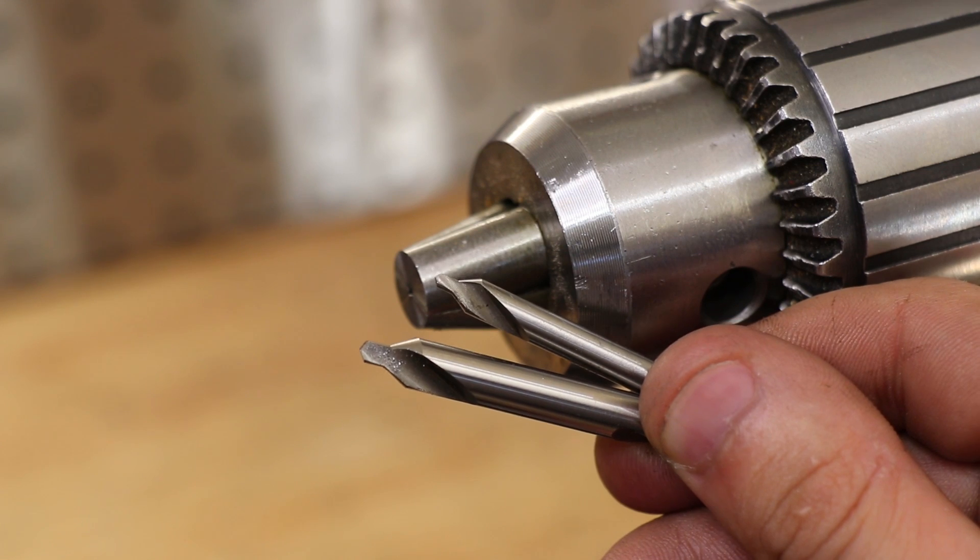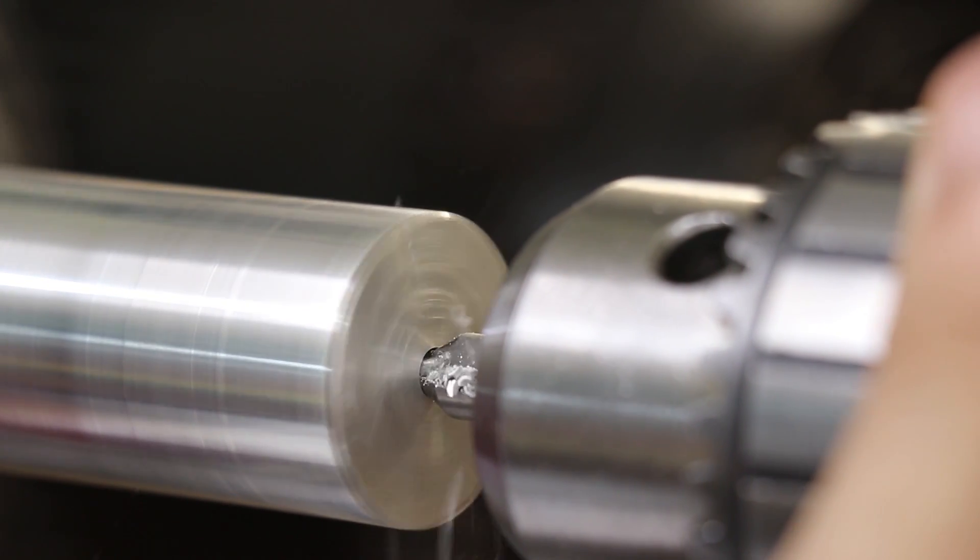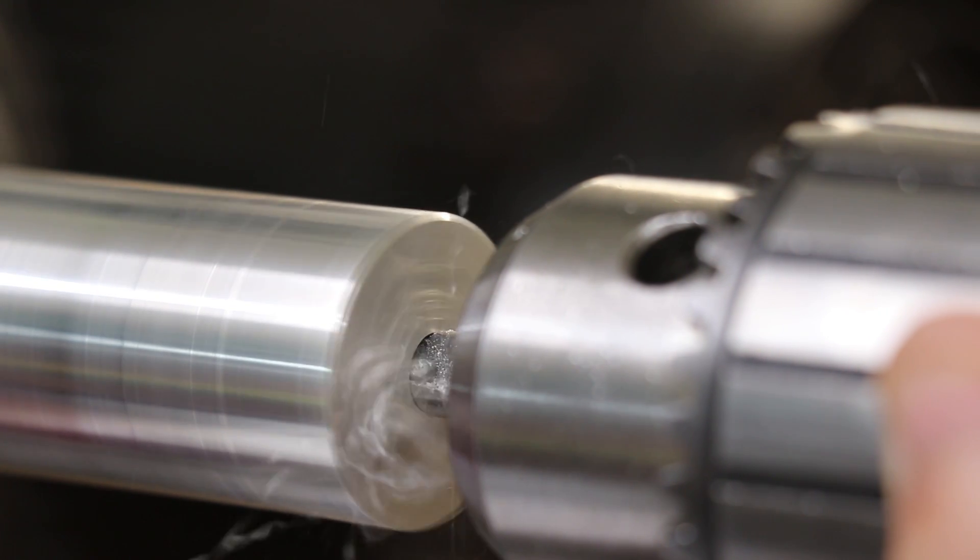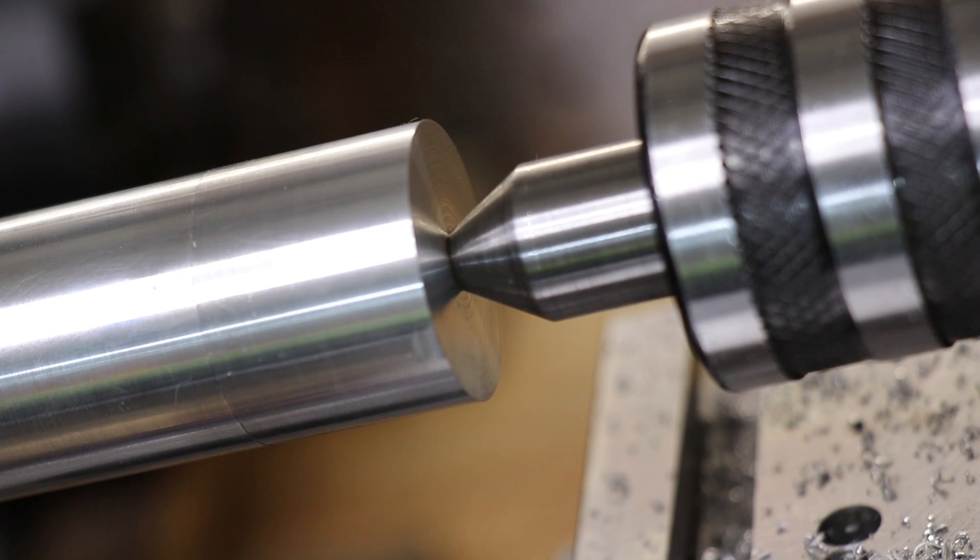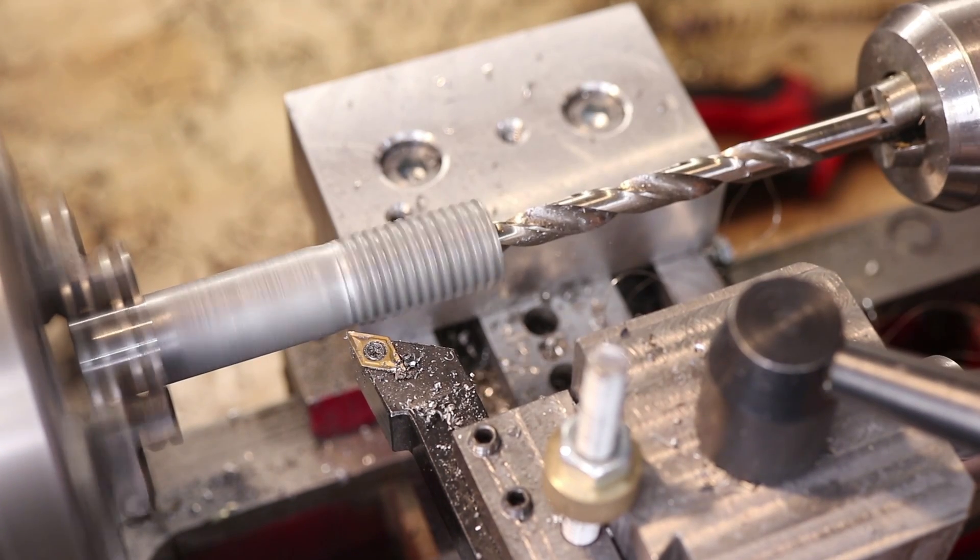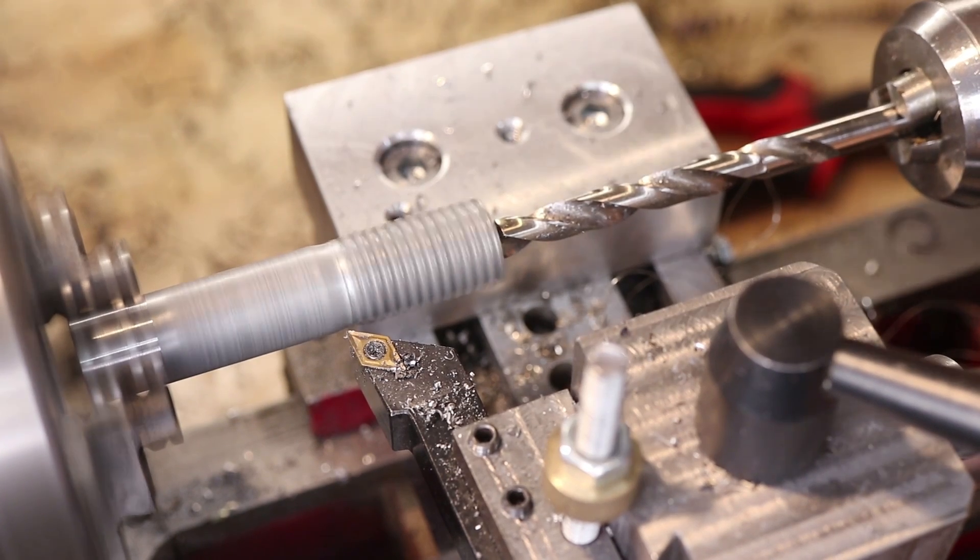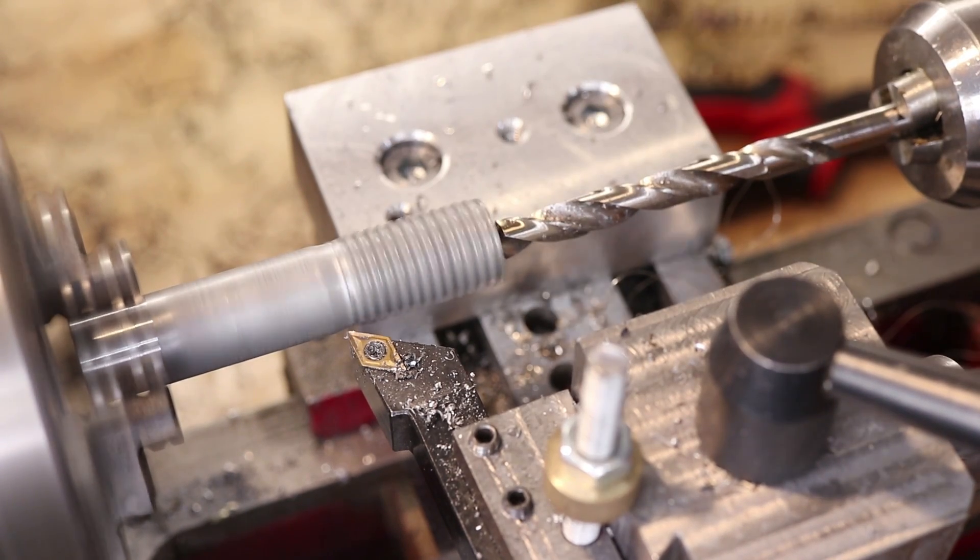However, the more expensive ones do tend to work a little bit better. Their main job is to cut a 60 degree center taper for a live or dead center, but they are really commonly used to spot drill using the tip. You can buy dedicated spotting drills, but I never have. These work just fine for spotting, just as long as you only use the tip for spotting.